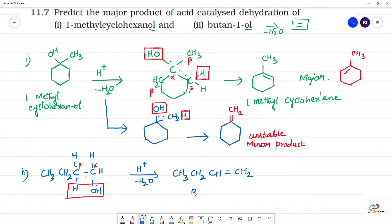What is the name of this compound? Bute-1-ene — the double bond is at the first position. This is the product of butane-1-ol dehydration. This is the only product; however, it will be unstable as it proceeds through a primary carbocation pathway.